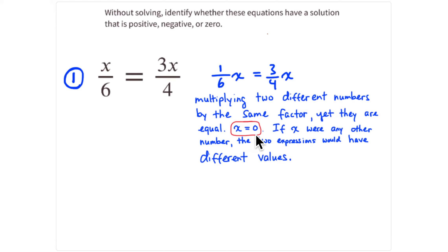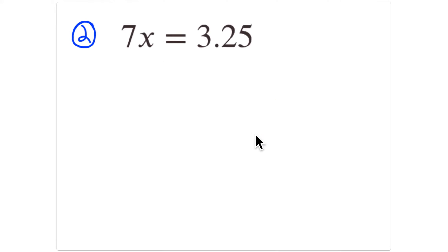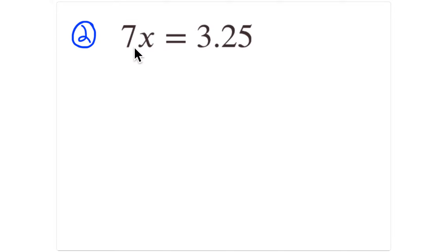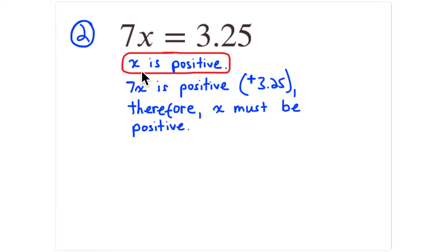The next problem is 7x equals 3 and 25 hundredths. This is a positive number of x's equals a positive number. The answer is going to be a fraction — a little bit less than one-half, since one-half of seven is three and a half. This is a positive number of positives equals a positive product, so x has to be positive.